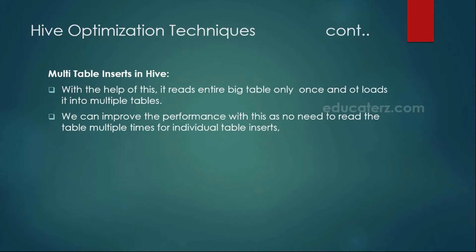In the previous modules, we discussed inserting with multi-table inserts in Hive. That means if you wanted to load data into multiple tables — suppose an employee table has millions of records and you wanted to load data into separate tables like less salary and more salary — you load based on conditions like less than a thousand or greater than a thousand into two different tables.